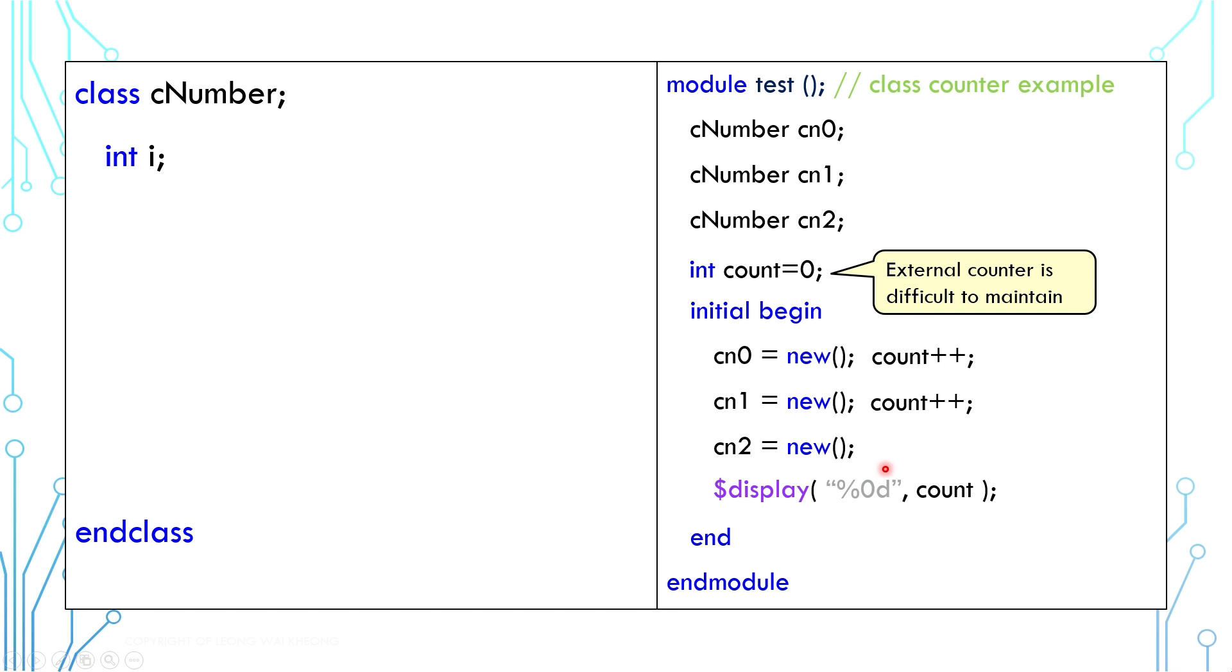It would be easier if the counter exists in the class and every time the new function is called, the counter is incremented automatically.